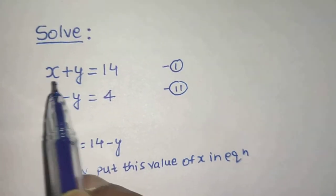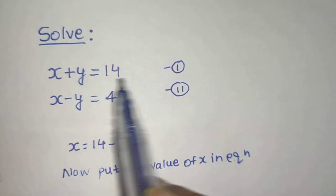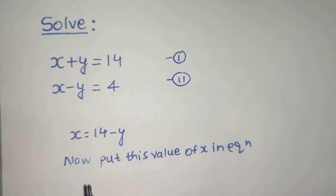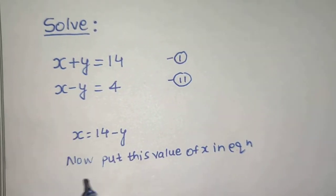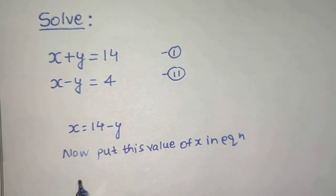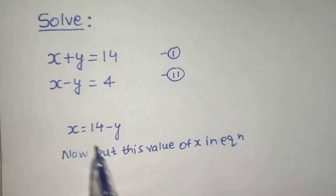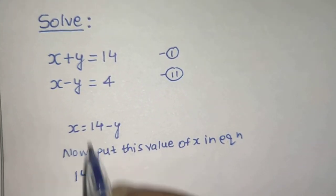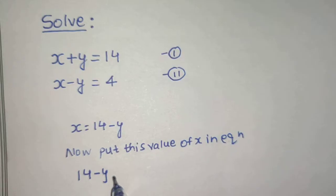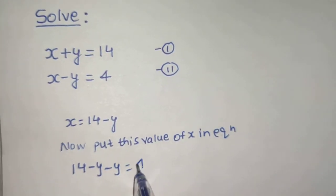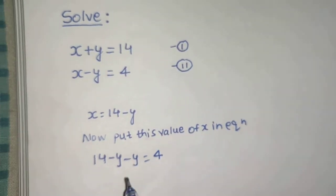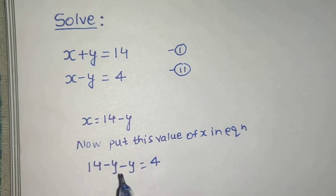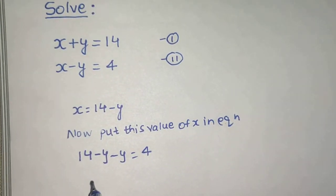We take the value of either x or y from one equation and put that in the other equation. If you put this in equation number 2, in place of x, put 14 minus y, minus y equals to 4. Now this becomes an equation of one variable, which we can easily solve.